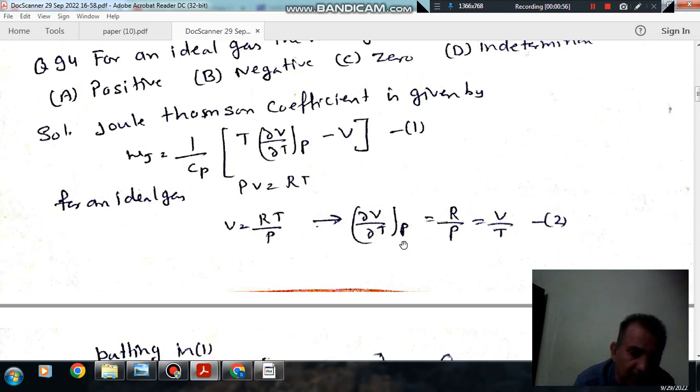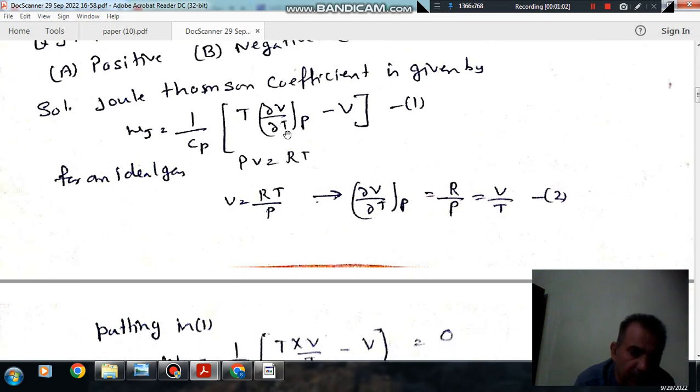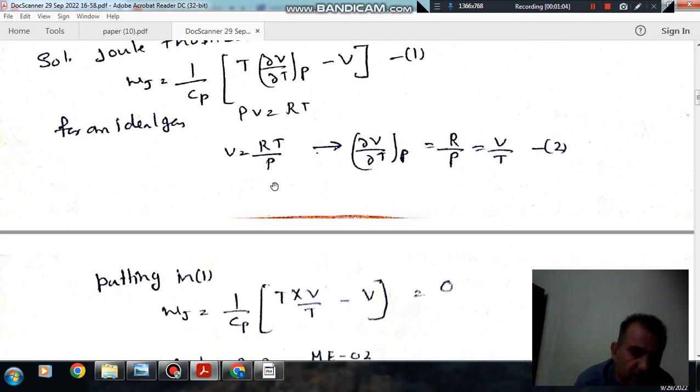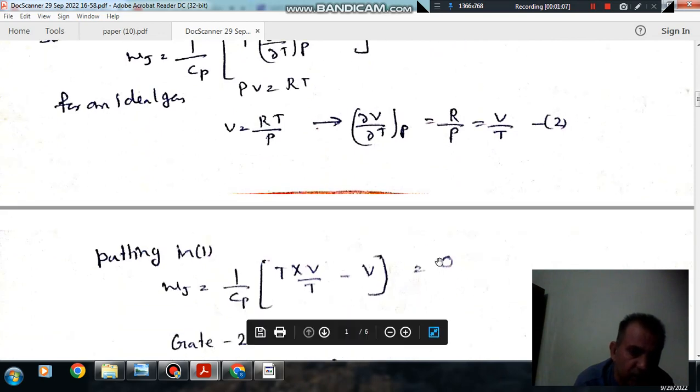V/T. So (∂V/∂T) at constant pressure is V/T. Putting here the value of (∂V/∂T) at constant pressure, we get the Joule-Thomson coefficient expression as...